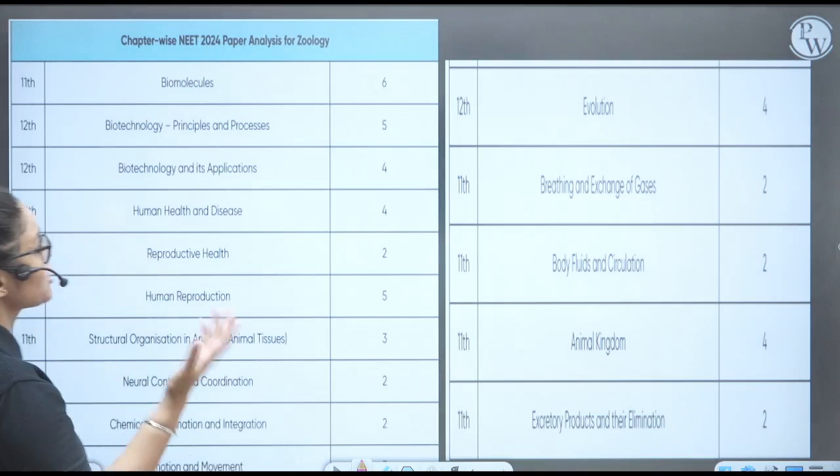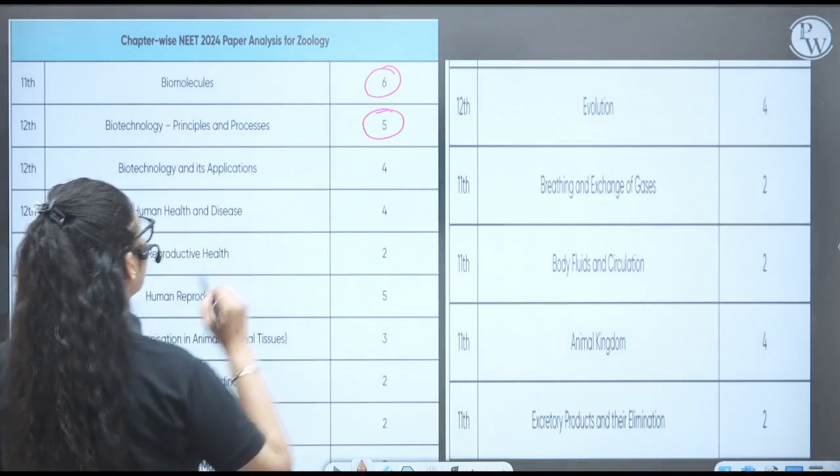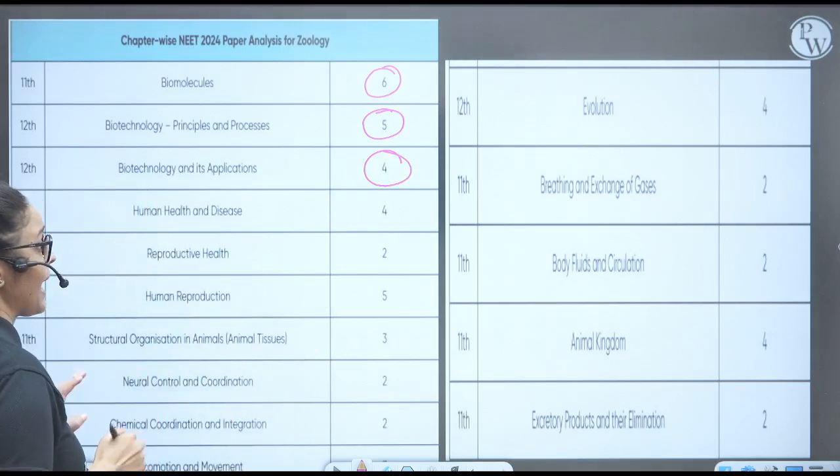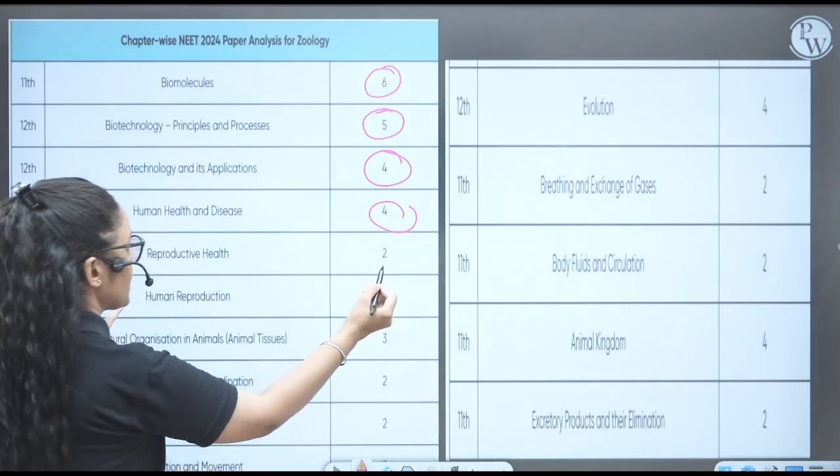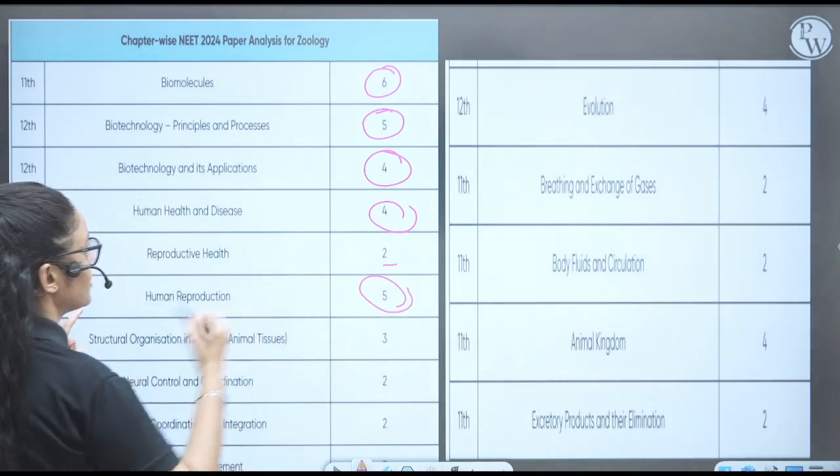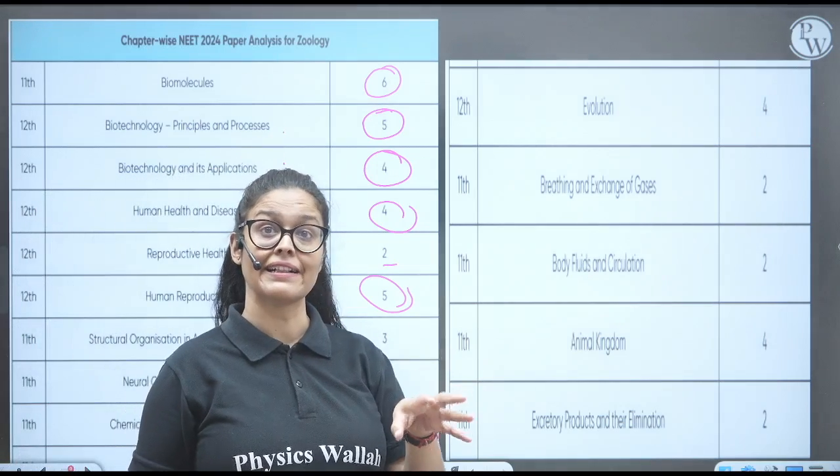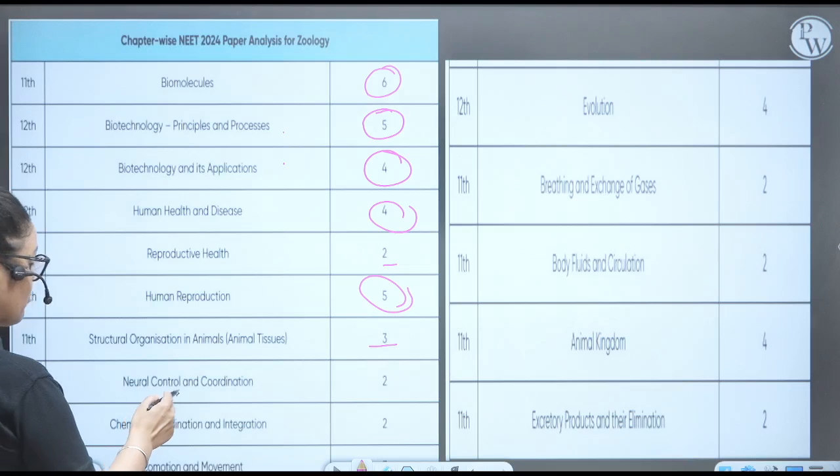Now let's see the Zoology. So biological principal processes, biomolecules, six questions. Biotechnology, principal processes, five. Biotechnology and its application, four questions. Human health and diseases, four. Reproductive health, two. See, like this chapter also have good weightage. So means biotechnology, human health, human reproduction, they have very good weightage. Structural organization, animal tissue, three questions.